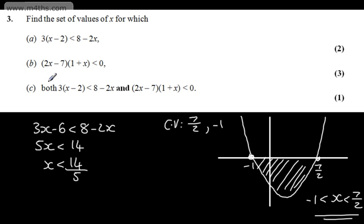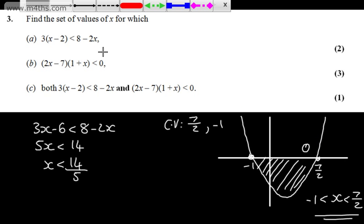In part c, for one mark, we need both of the above. So if we consider the 2.8 or 14/5, 2.8 is going to go just here. We're interested in values to the left of that.